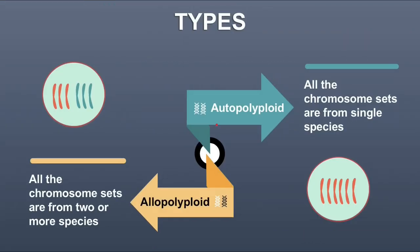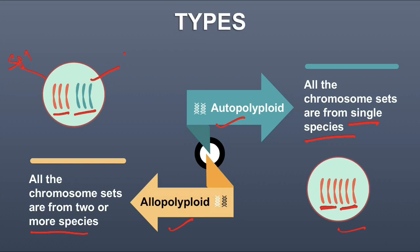There are generally two types of polyploidy: autopolyploid and allopolyploid. In autopolyploid, the chromosome sets are from a single species, as you can see here. In allopolyploid, the chromosomes come from two or more species. Here you can see these two chromosomes are the same color — same species — and the other chromosomes belong to a different species.